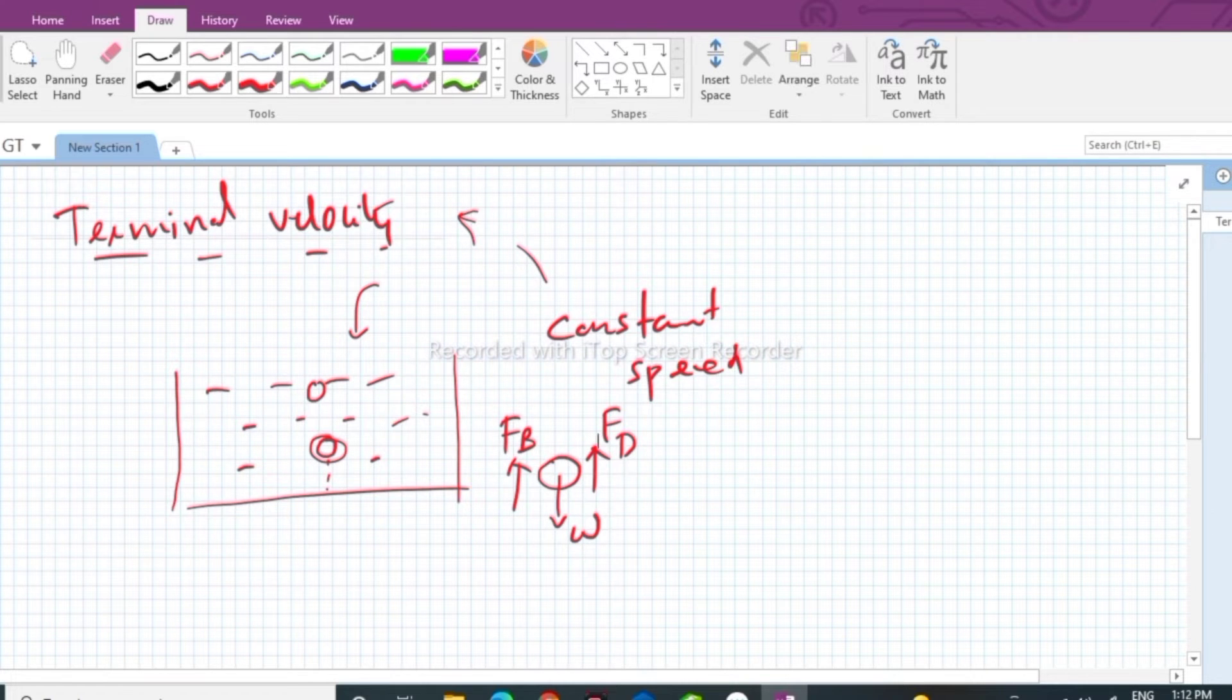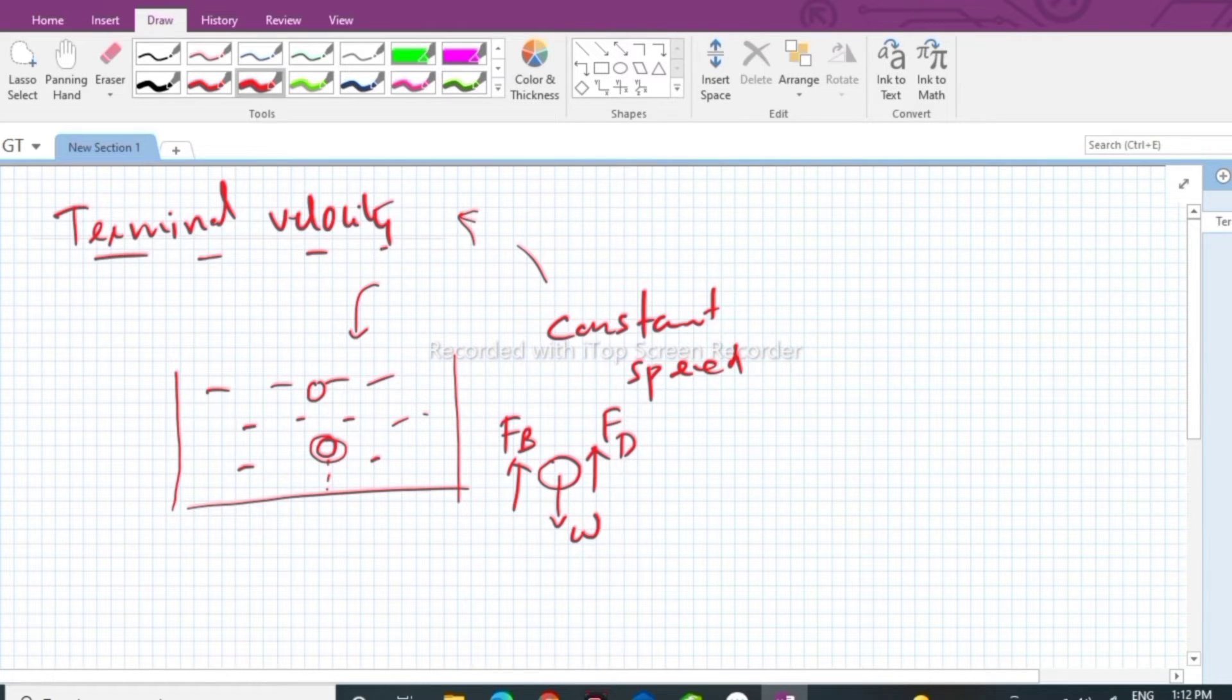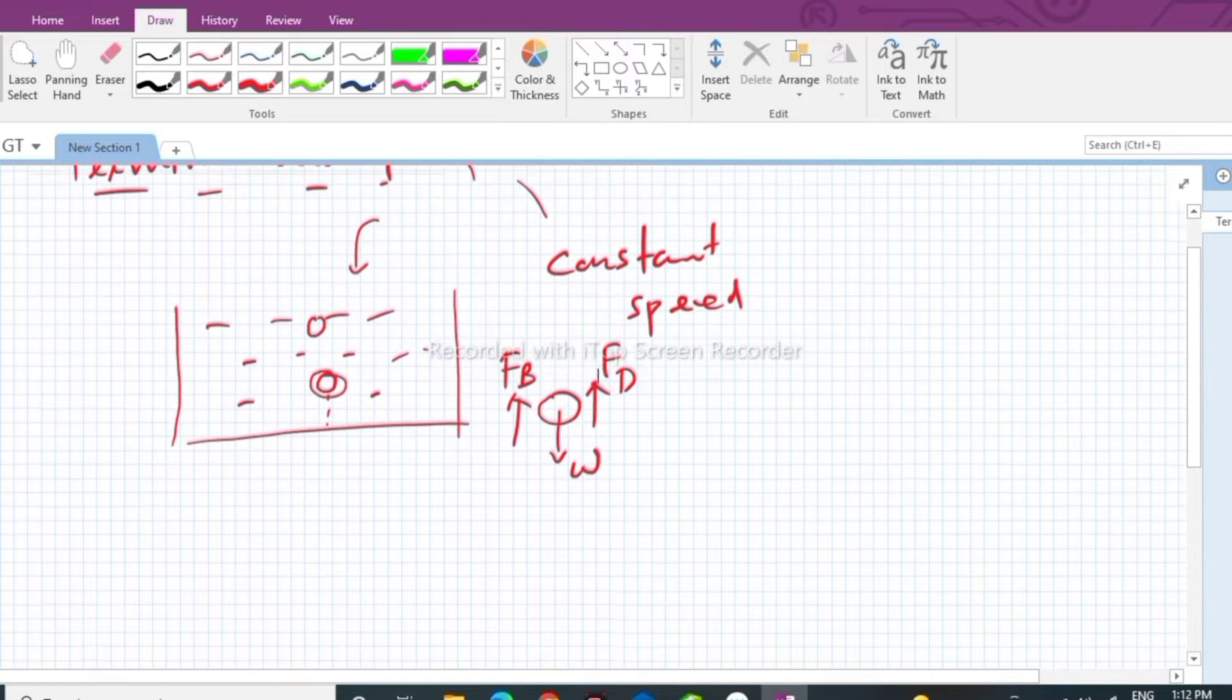There will be a drag force which is given by Stokes law. It is also acting on the body. Why drag force is acting? The solid molecules are in contact with the liquid molecules, so there will be a rupture between the inter-particles. So in equilibrium, what happens? W is equal to Fb plus Fd. You know that in a state of equilibrium, Fnet is equal to zero.